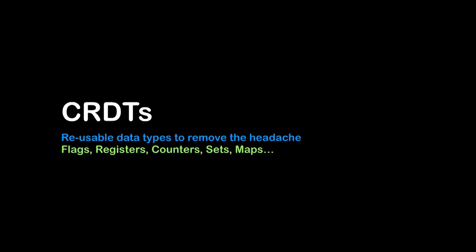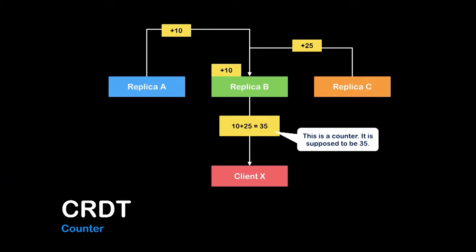What if someone built a series of reusable data types? Convergent replicated data types are those data types, and offer a principled approach to eventually consistent data modeling. Some very cool maths ensures these defined data types always converge to a single correct value. A CRDT counter can know that different numbers on either side of a partition can resolve and be added up to give you the correct answer. A CRDT set can take different copies of the same value and know that they should be merged together into a list.